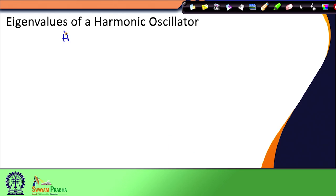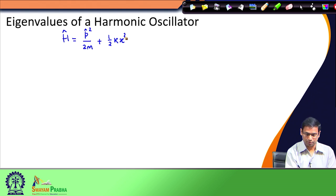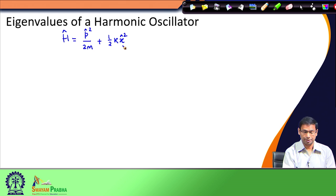To recall, we have written down the Hamiltonian of the harmonic oscillator problem. The Hamiltonian had a kinetic energy term and a potential energy term. The kinetic energy term is given by the operator p² / 2m, and the potential energy term is given by the operator ½kx². Here p is the momentum operator and x is the position operator.